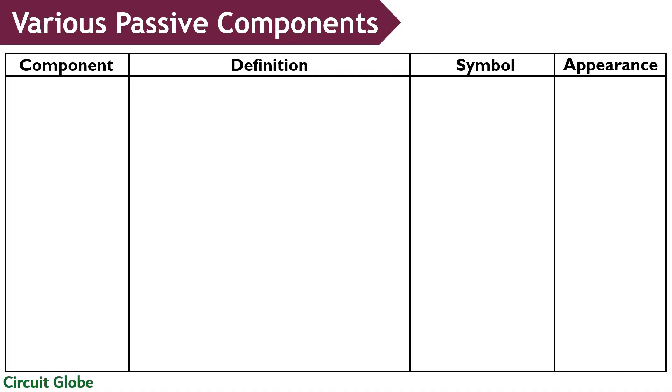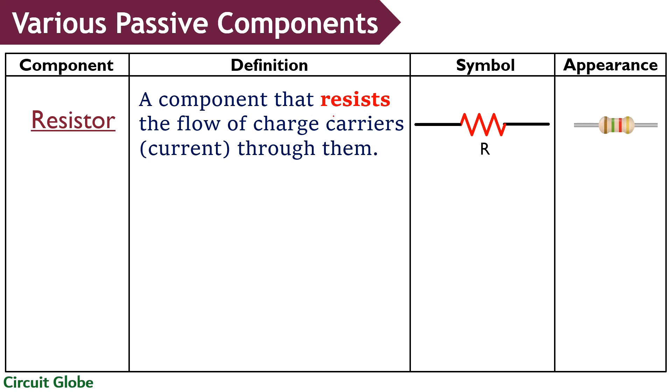The first passive component is resistor. It is a component that resists or obstructs the flow of current through it. So basically, resistors provide electrical resistance to the circuit. The behavior of resistor is defined under Ohm's law.